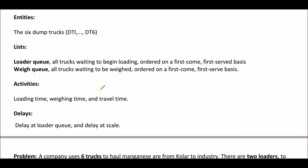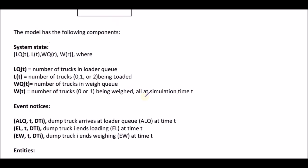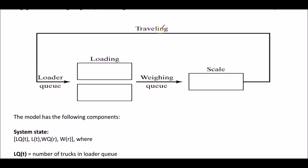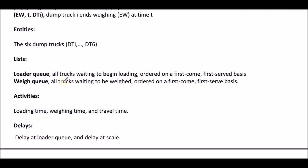Then we have the activities. There are three activities: the loading time, the weighing time, and the traveling time. The loading time is from the loader queue to the loader; the weighing time is from the weighing queue to the scale; and the travel time is after being scaled, traveling the full distance and returning to the loader queue. Finally, we have delays, which can occur at the loader queue and at the scale. Delays are generally not explicitly modeled, but it's good to know they can happen.